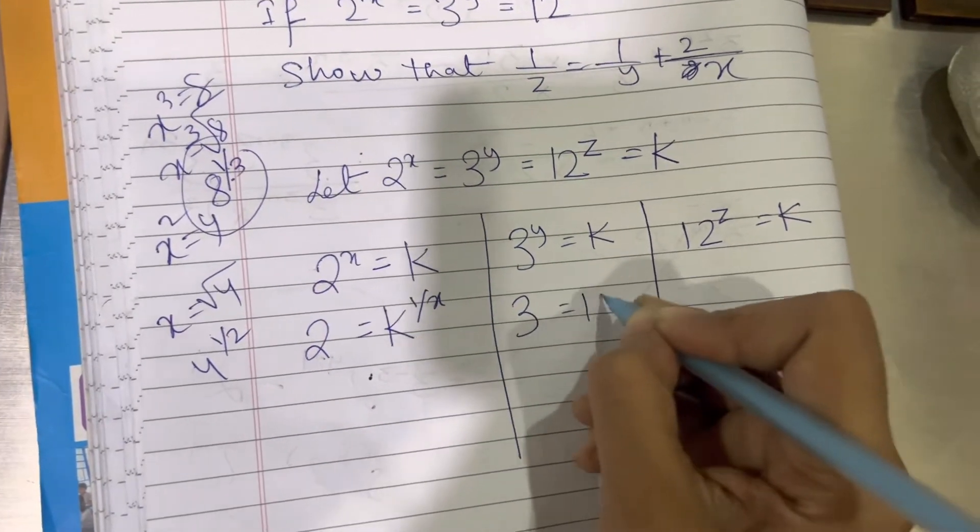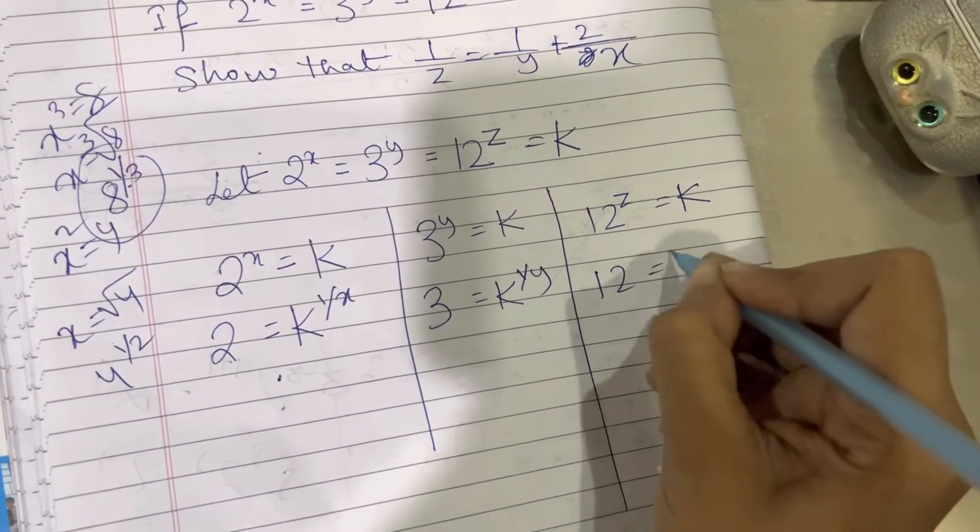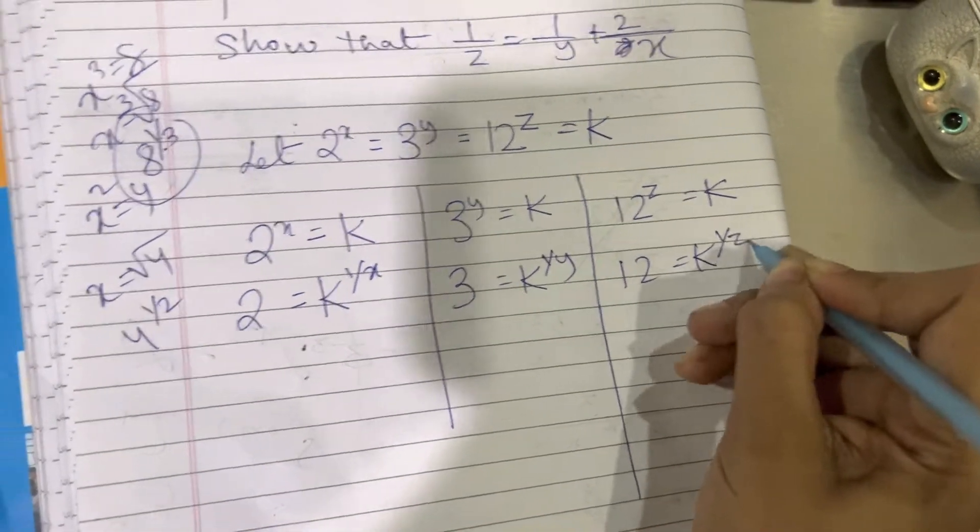So therefore 3 will be equal to k to the power 1 by y. 12 will be equal to k to the power 1 by z. This is the first rule.